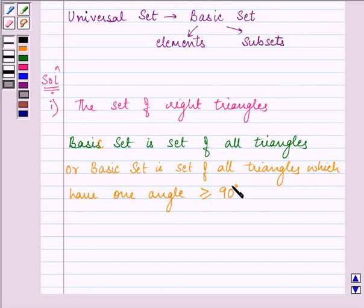Similarly, basic set could be set of triangles which have one angle greater than or equal to 90 degrees or less than or equal to 90 degrees. So these are the three basic sets.